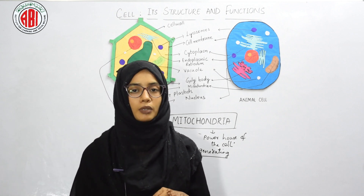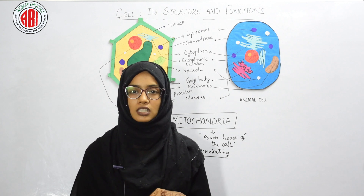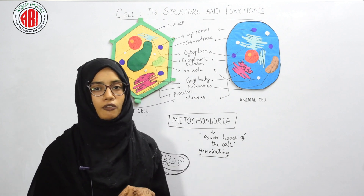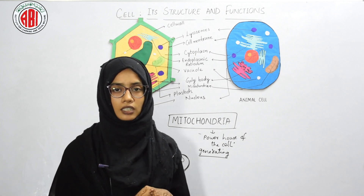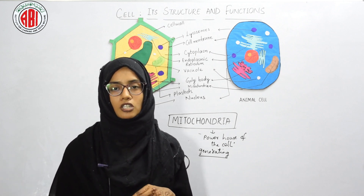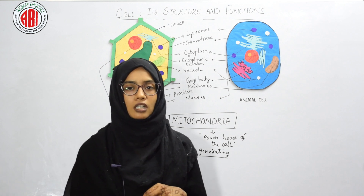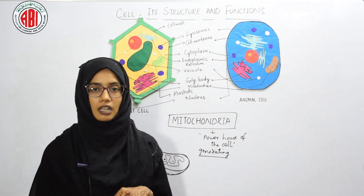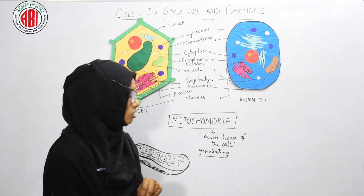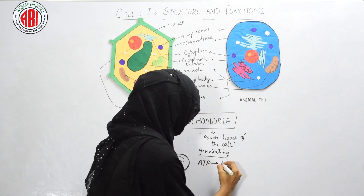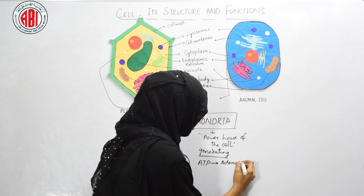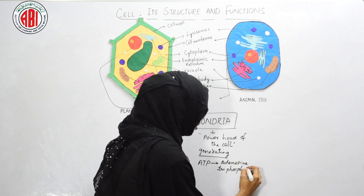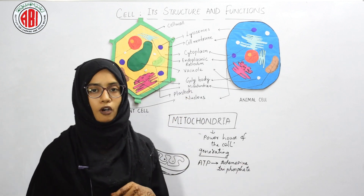ATP helps in carrying out metabolic as well as cellular activities in our body. When we talk, read, play, or do other activities, contraction of muscles occurs, and this contraction needs energy in the form of ATP. ATP stands for adenosine triphosphate — it is an energy-packed molecule required by the body for both physical and chemical activity.